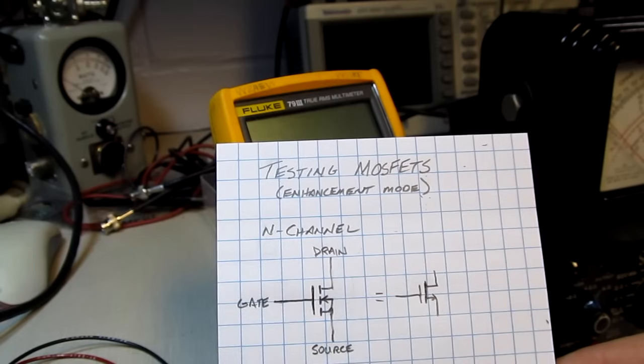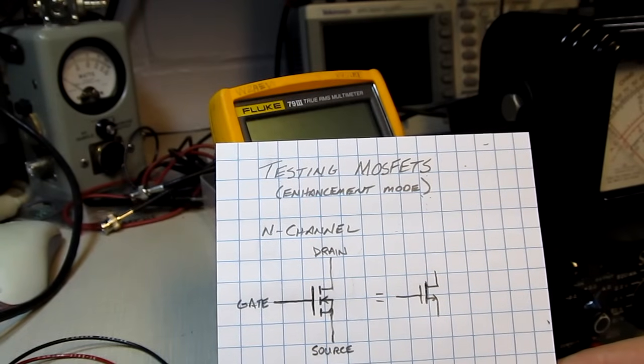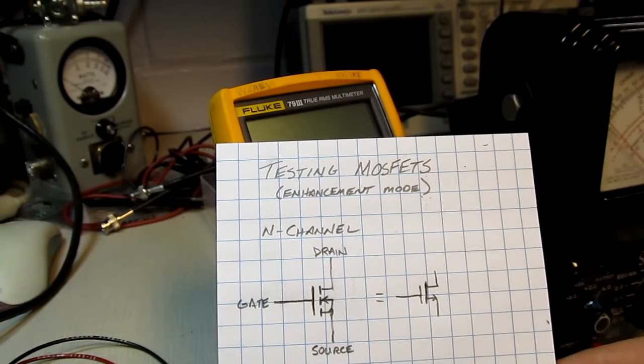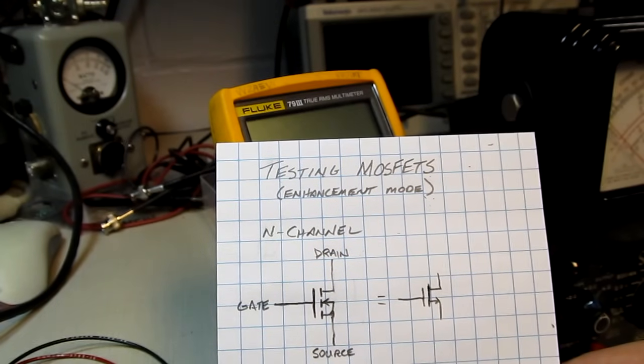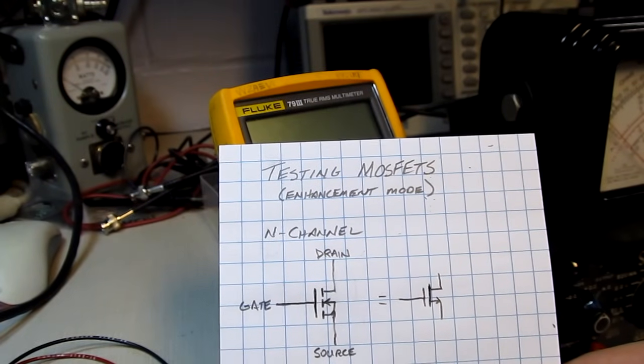In the previous video, we talked about a couple of ways of testing bipolar junction transistors. In this video, we'll talk about a couple of ways of testing MOSFETs, specifically enhancement mode MOSFETs, which are certainly the most common.